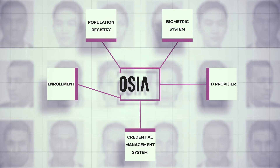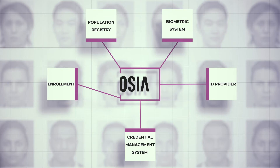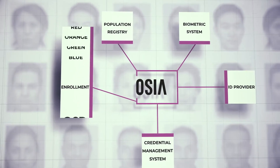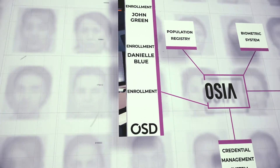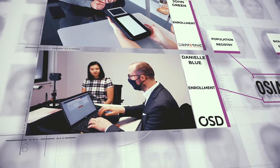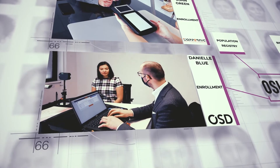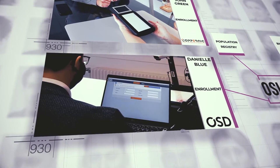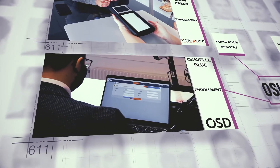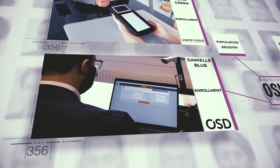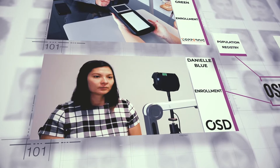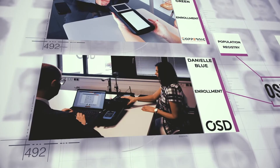Let's take an example. A government is issuing an identity card — physical and digital — to their citizens. To issue an ID card, citizens must first get enrolled. Let's follow the journey of four citizens living in different locations.